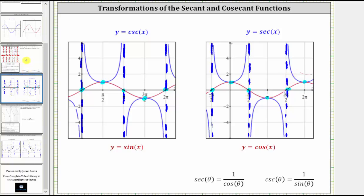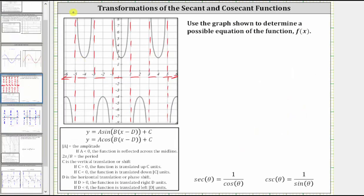Going back to our graph, we now know where we have a vertical asymptote, the related sinusoidal function value will be at the midline. Similarly, the points of intersection occur at the low points and high points of the given graph in terms of secant or cosecant. Now let's go ahead and sketch the related sinusoidal function.